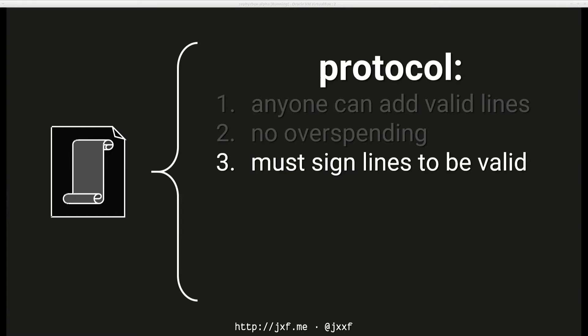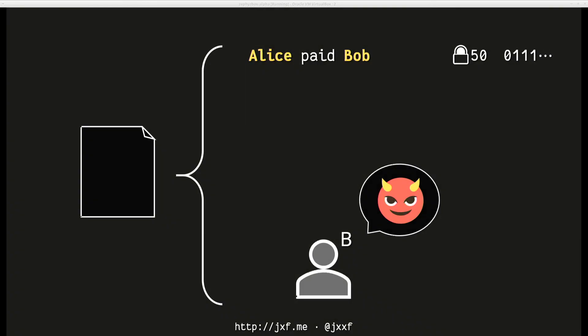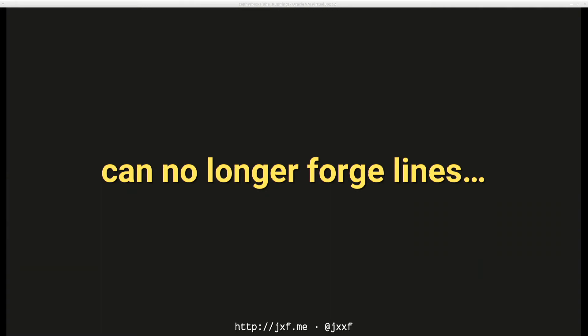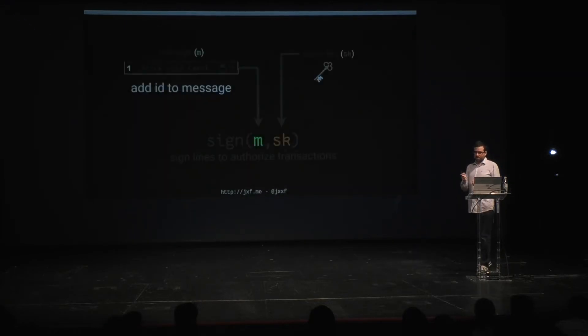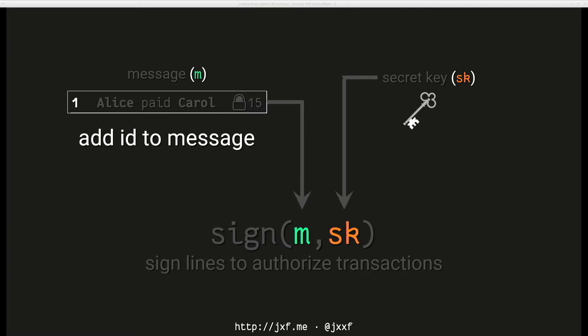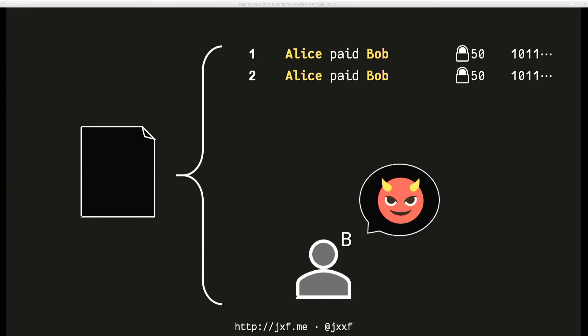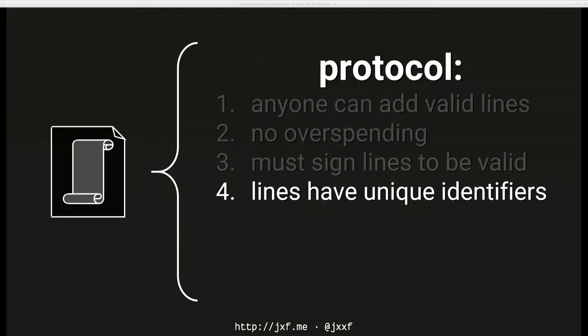We require that lines be signed to be valid. Now when Bob tries to forge a record, he can't because he doesn't know Alice's secret key. But Bob is clever: he notices he can find a legitimate transaction in which he was paid and simply copy it — it has the same signature, so it's valid. So he can duplicate legitimate lines even if unauthorized. To fix this, we add a unique identifier to each message — like a timestamp or auto-incrementing integer — preventing replay attacks.